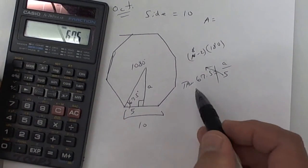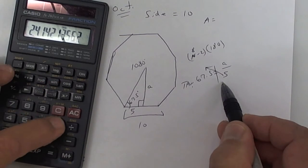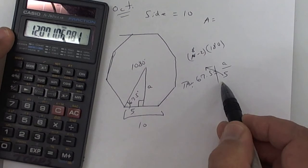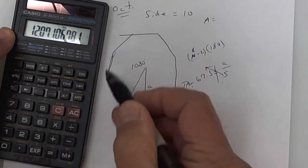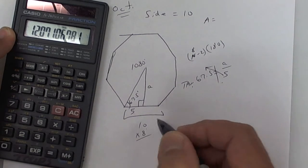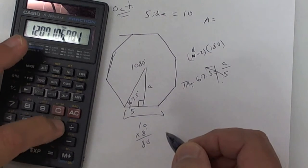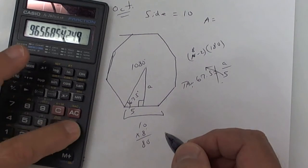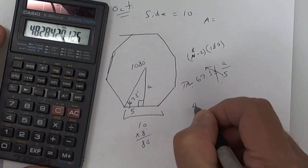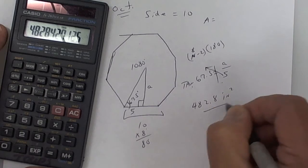To get the apothem, it's opposite over adjacent. The tangent of 67.5 equals opposite over adjacent. Take tangent of that, then times 5, press equals — that's your apothem. Then we've got the perimeter: 8 times 8 sides, so the perimeter is 80. Times 80, press equals, then divide by 2. You get 482.8 square inches.